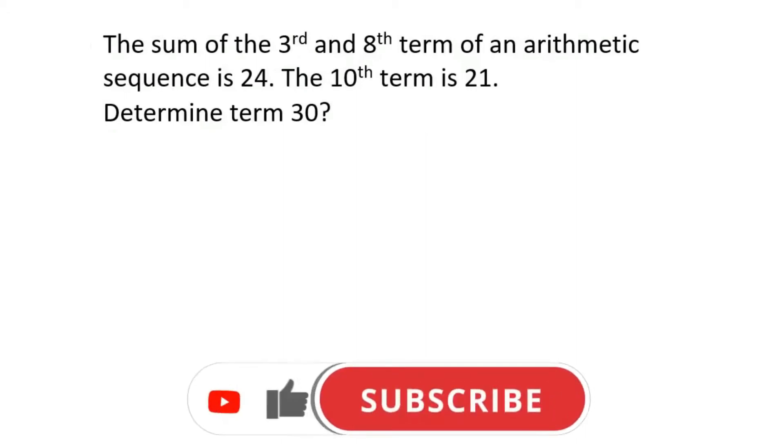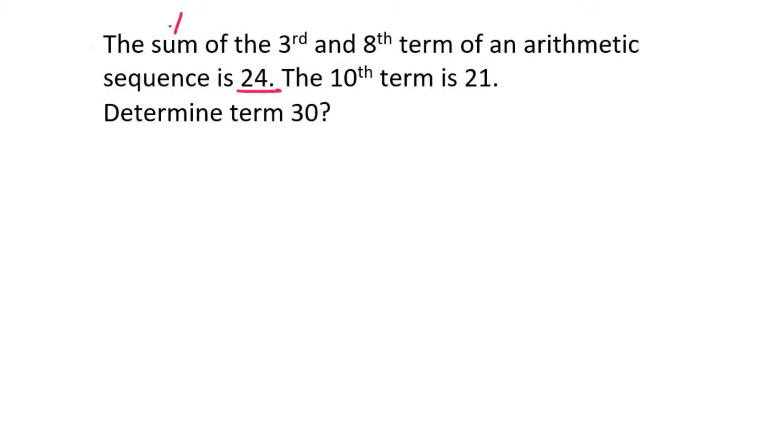The sum of the third and eighth term of an arithmetic sequence is 24. Now what often happens is students see the word sum and they instantly want to go for the sum formula. But I'll show you why this is incorrect.